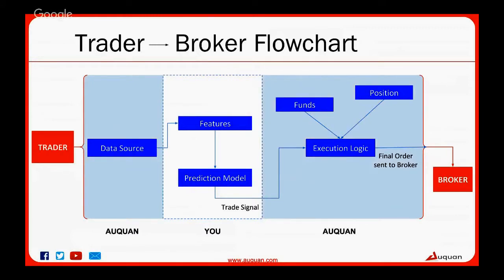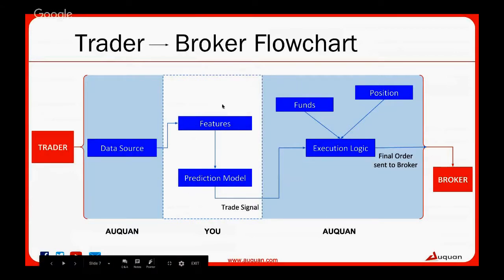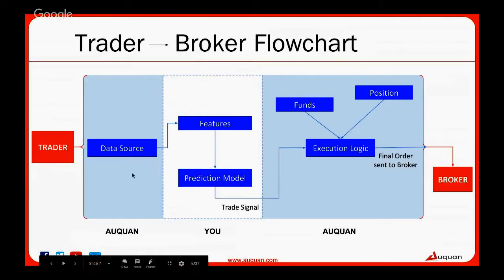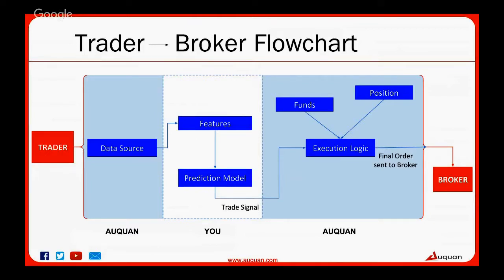In abstracting finance out of the problem, Awkward has data scientists work only on feature engineering and the prediction model. Awkward takes care of getting the data, parsing and converting it into the format your model expects. Once you build the prediction model, Awkward handles building the execution logic, running your trading signal through it, managing current position and funds, connecting to the exchange, sending information to the broker, getting confirmation back, and managing your position. As a data scientist, you focus only on the data problem — what you do best.